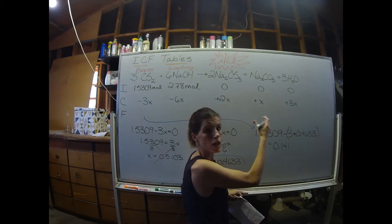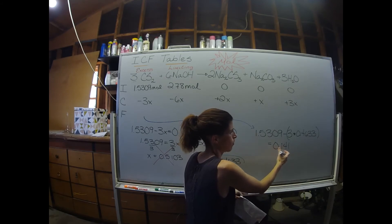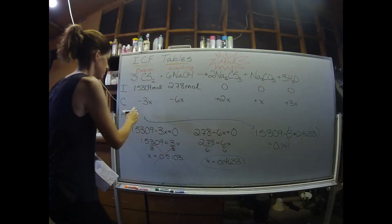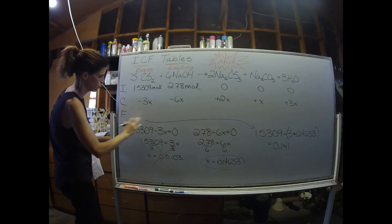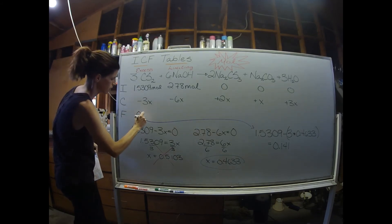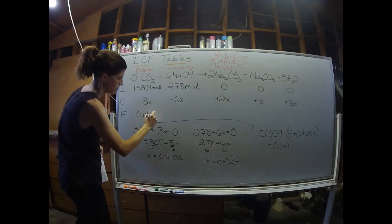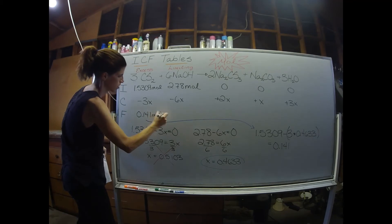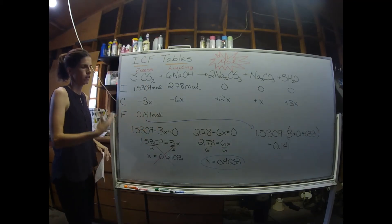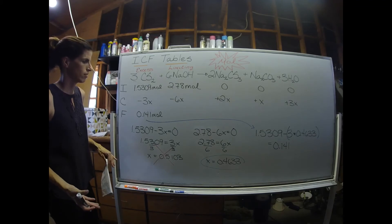And when I do that, I get 0.141. Well, everything in here has units of moles. So this is 0.141 moles, and I need to put that value in the final line. That tells us how many moles of carbon disulfide are left over after the reaction is complete.